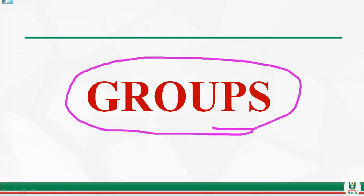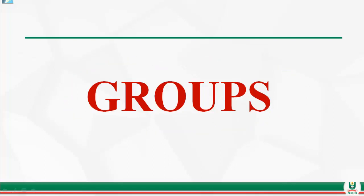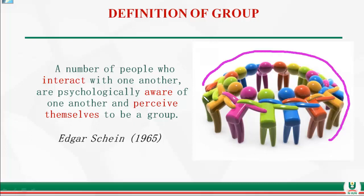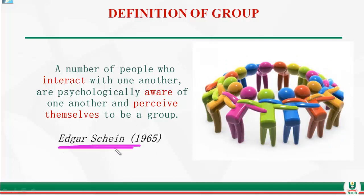Let's define groups. A group is a number of people who interact with one another, are psychologically aware of one another, and perceive themselves to be a group — meaning they are socially bound and recognize themselves as members. This definition is given by Edgar Schein in 1965.